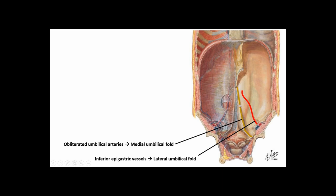The median umbilical fold is a remnant of the urachus, an extension off the top of the urinary bladder going straight to the umbilicus. Clinically: to find the bladder by scope, identify the median umbilical fold; to find the internal iliac vessels, identify the medial umbilical fold; to identify the external iliac artery and vein, follow the lateral umbilical fold.